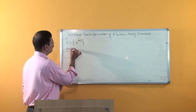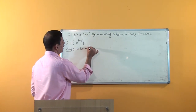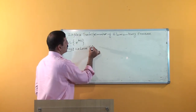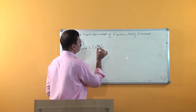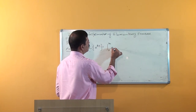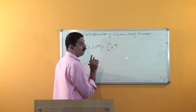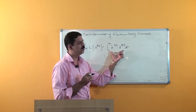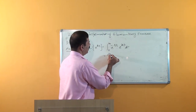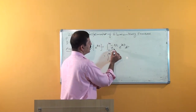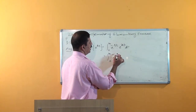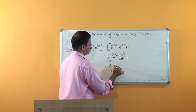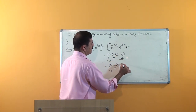How do we obtain this using the definition? Here f(t) = e^(kt). Applying the definition, Laplace of e^(kt) equals integral from 0 to infinity of e^(−st) · e^(kt) dt. Since the bases are the same, we combine the exponents: e^(−st + kt) = e^(−(s−k)t). So we have the integral from 0 to infinity of e^(−(s−k)t) dt. This is now ready for integration.